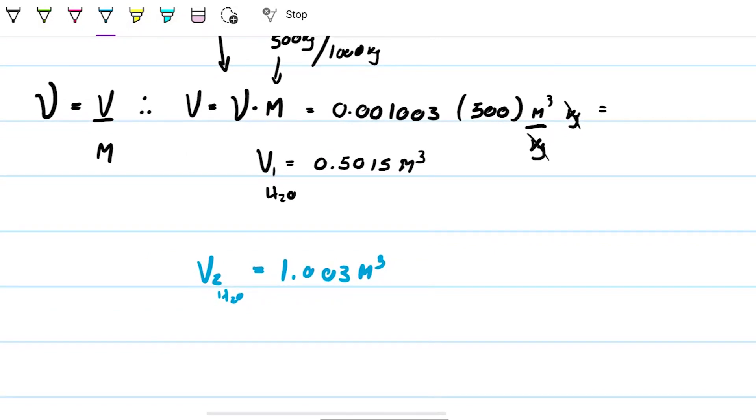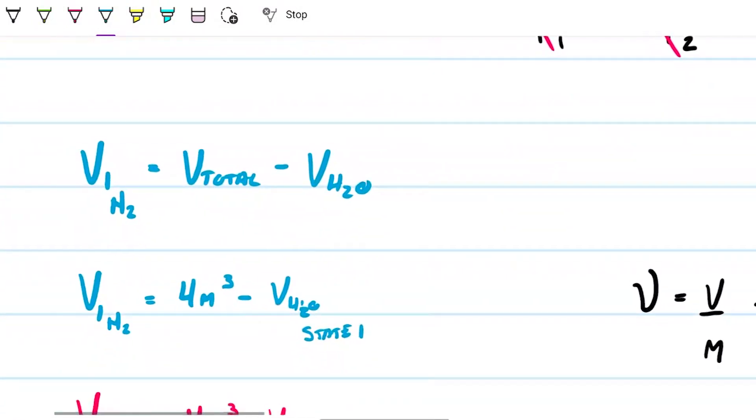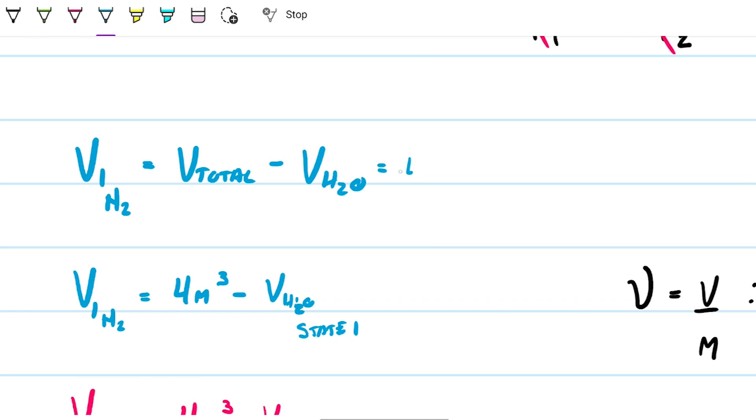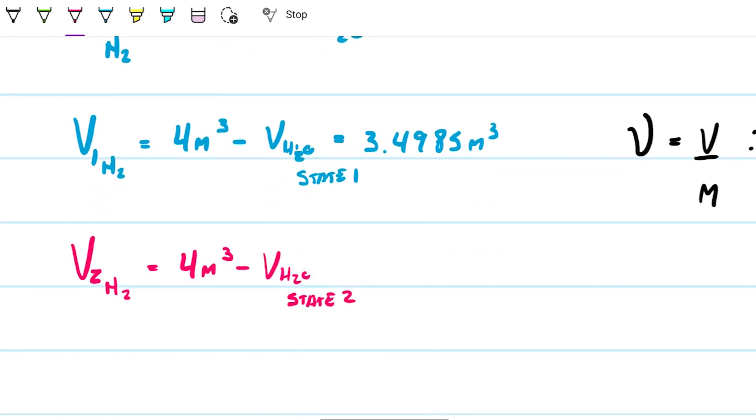Okay, those are the two figures that I'm missing so that I can go ahead and calculate this. This, because that's going to be 4 minus 0.5, so this is 3.4985. And this is 4 minus 1.003, so this is 2.997 meters cubed.